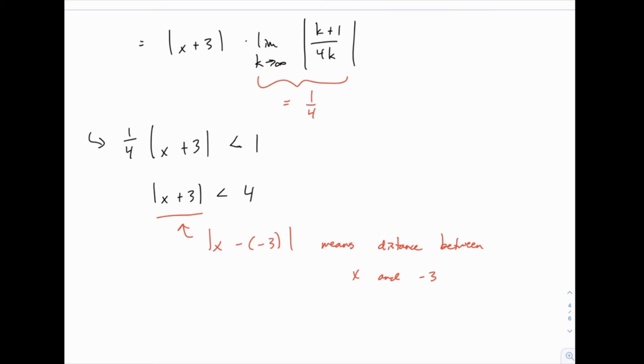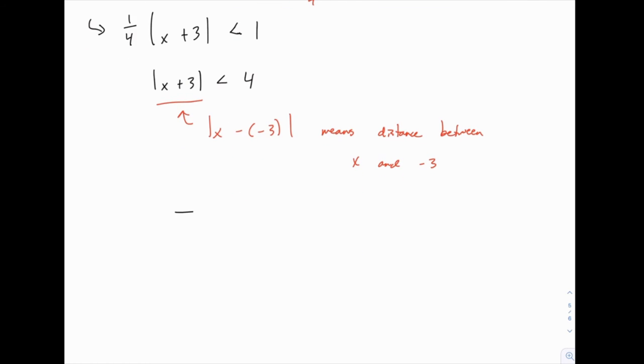So we already know by thinking about it ahead of time that this power series is centered at negative 3, and this just confirms it for us that that absolute value of x plus 3 is the same as the absolute value of x minus negative 3. And again, the absolute value of a difference is the distance between those two values. So when you read this, you can interpret it to say the distance between x and negative 3 has to be less than 4. So from negative 3, x can go down 4 units or it can go up 4 units. If we picture this, here's negative 3. If we go down 4 units, we get to negative 7. If we go up 4 units, we get to positive 1. So that's our interval of convergence.